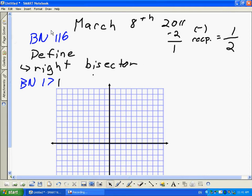2011, maybe 3.3, 3.2. We're going over right bisector. So on page 171 of your blue book, they've given us a triangle. ABC has these vertices.